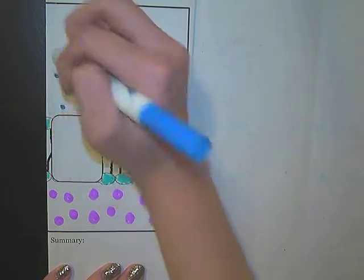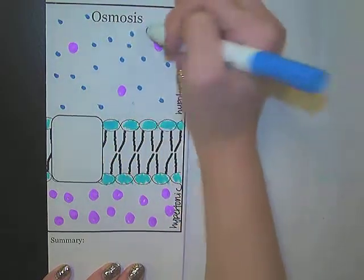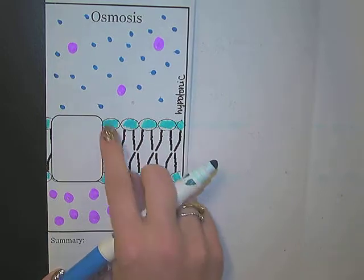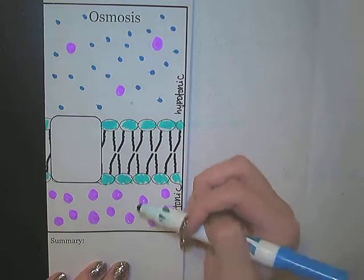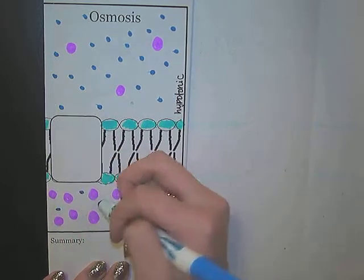This water is able to cross the membrane because we have a special protein channel called aquaporin that will let the water in. Over here on this side we have more solutes, so we have less water.